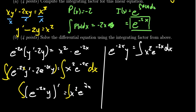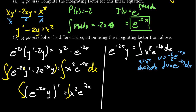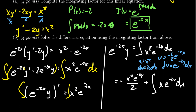Integration by parts is the right approach here, since we have a power function times an exponential. We set u equal to x squared so that taking the derivative reduces the power, giving du equals 2x dx. We set dv equals e to the negative 2x dx, so v equals negative one half e to the negative 2x. This yields negative x squared e to the negative 2x over 2, plus the integral of x e to the negative 2x dx, where the one half and 2 cancel and a double negative gives a plus.